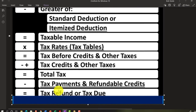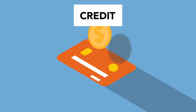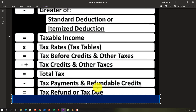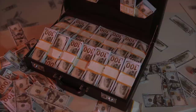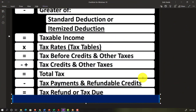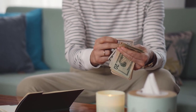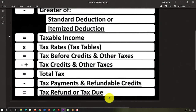You also have refundable credits, which have become increasingly significant — things like the child tax credit, which now has an advance portion, the earned income credit, and possibly the recovery rebate credit tied to economic stimulus payments. Refundable means you could go below zero tax owed — not just getting back what you overpaid, but actually receiving money through the tax code. It's not really a refund in the traditional sense; it's more like a benefit program delivered through your tax return.